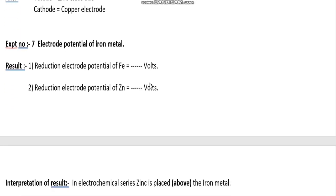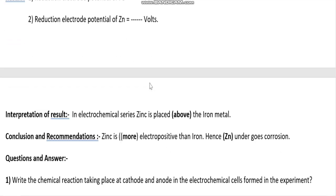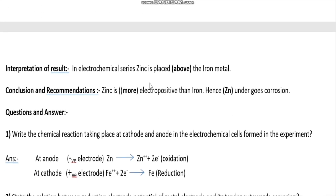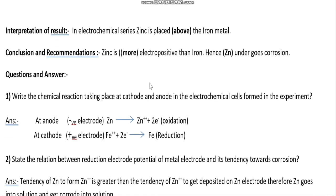Write down the result as follows: reduction electrode potential of iron is how much volts, and reduction electrode potential of zinc as given in the experiment. Interpretation of result: in the electrochemical series, zinc is placed above the iron metal. Conclusion: zinc is more electropositive than iron, hence zinc undergoes corrosion.